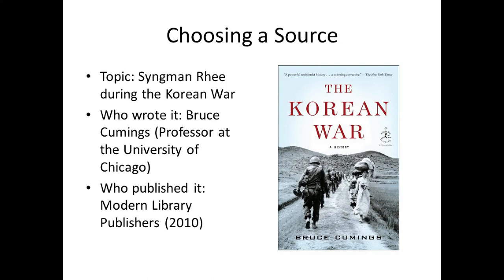That was an example of a book you can use — just be careful. Now, let's say your topic is Syngman Rhee during the Korean War, and you see a book called The Korean War: A History. That sounds really good. Who wrote it? A man named Bruce Cummings. He's a professor at the University of Chicago — a good university that does some good work on Korean history. That's a positive.